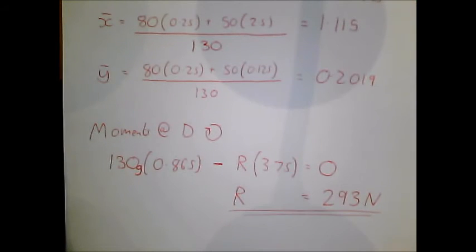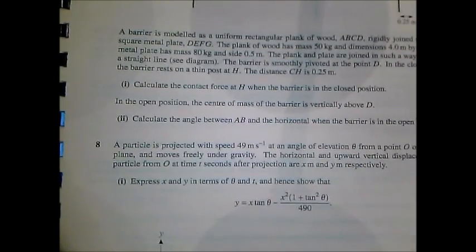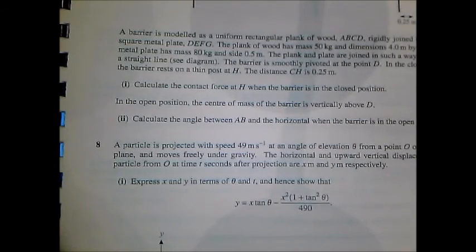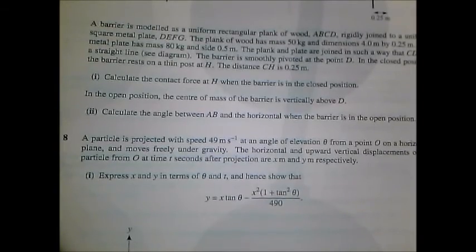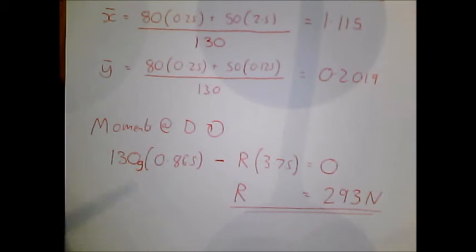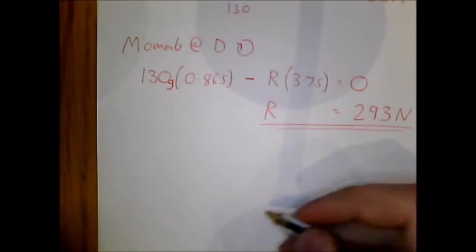And for part 2, we're told in the open position, the centre of mass of the barrier is vertically above position D. And we want to find the angle between AB and the horizontal when it's in its open position. And this one's going to be a little bit more trickier.